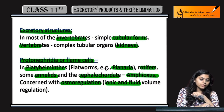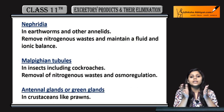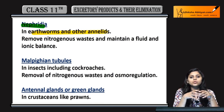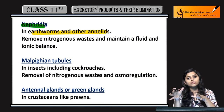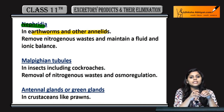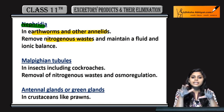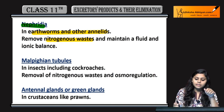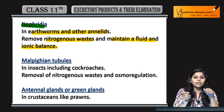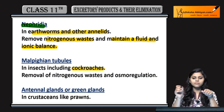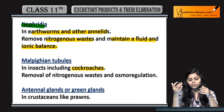Nephridia earthworm aur annelids mein tubular structures hote hain jo excretion mein help karte hain — nitrogenous waste remove karte hain. Yeh bhi maintain karte hain fluid and ionic balance ko. Malpighian tubules cockroaches mein present hote hain, nitrogenous waste ki removal karte hain aur osmoregulation maintain karte hain.